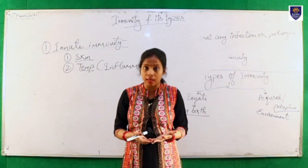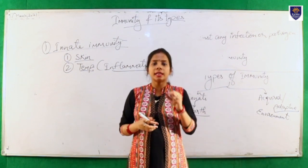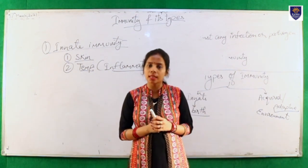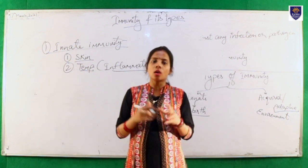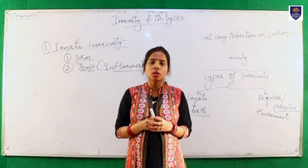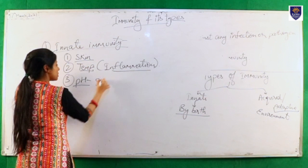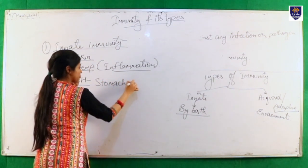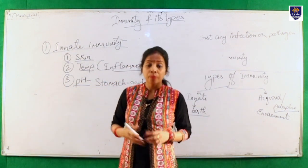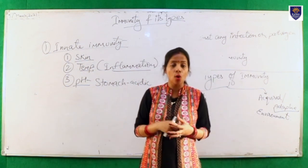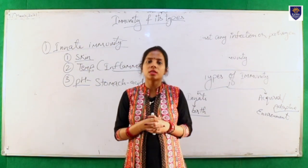Next is temperature. Our body's normal temperature means that many pathogens cannot adapt or survive inside the body. The inflammation response — known as inflammation — causes redness and itching at a particular area of the skin or body. Third is pH. Our stomach is acidic, and most pathogens and microorganisms do not survive in acidic pH.